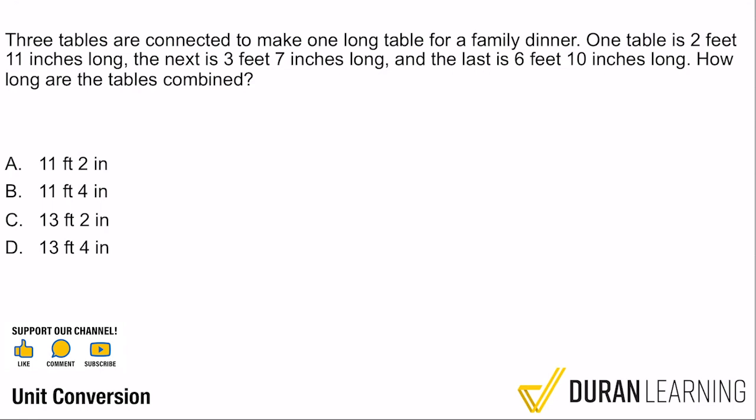Three tables are connected to make one long table for a family dinner. One table is 2 feet 11 inches long, the next is 3 feet 7 inches long, and the last is 6 feet 10 inches long. How long are the tables combined?